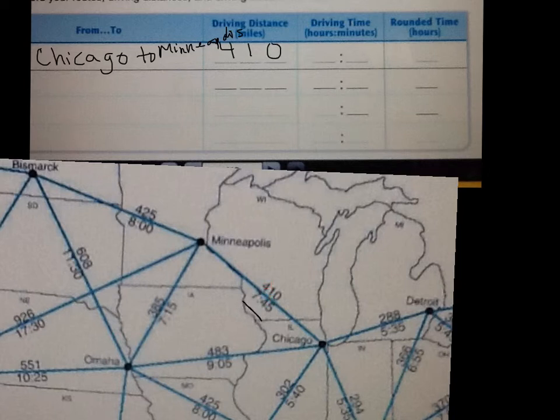I then see the number 745. That's the number of hours and minutes. So going from Chicago to Minnesota, I'm going to drive 410 miles, which is 7 hours and 45 minutes. When I round 7 hours and 45 minutes to the nearest hour or half hour, it would be 8 hours.